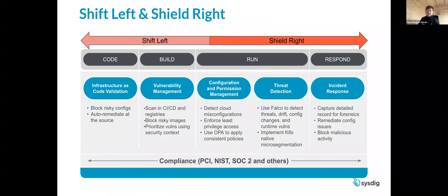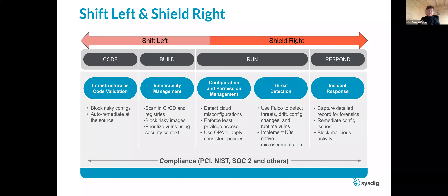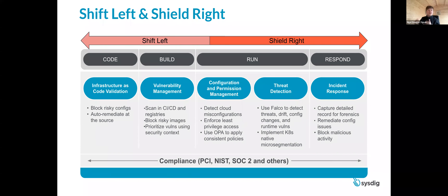Where Falco comes in is we're focused on the shield-right approach — once you've actually deployed those images and they're running as containers, what are they doing? What happens if a running container has elevated permissions and gets compromised? Things like a container created from the shift-left approach with privilege set to true — it has host permissions and can run as root. You might use open policy agent to define what you allow in runtime, but if certain configurations are bypassed or logging is disabled, how do you know? Falco is the solution for that.